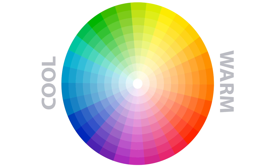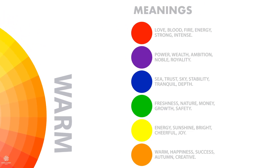Knowing color meanings and psychology makes a huge impact on your design. Red resembles love, blood, fire, energy, and intensity. Purple resembles power, wealth, and ambition. Blue conveys trust, sky, and stability. Green suggests freshness, nature, money, growth, and safety. Yellow brings energy, sunshine, and joy. Orange resembles warmth, happiness, success, and creativity. Keep in mind that colors can have different meanings across cultures.